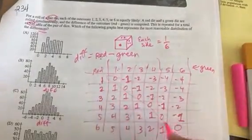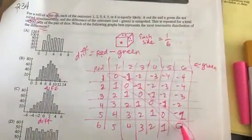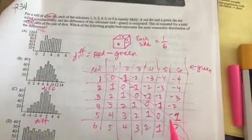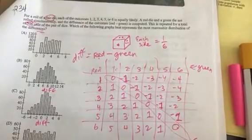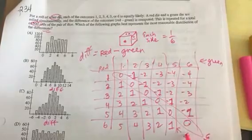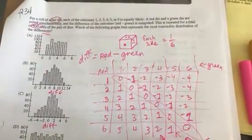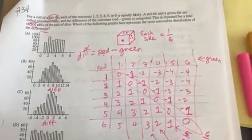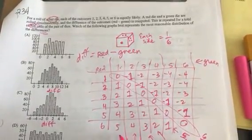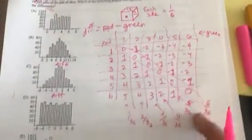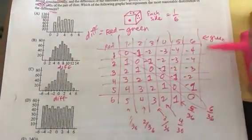And so the most likely outcome is actually zero. That happens six out of the 36 times. The number one happened five out of 36. This happened four out of 36. See the pattern here? Three out of 36. Two out of 36. One out of 36.